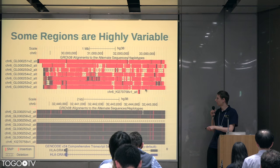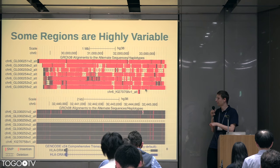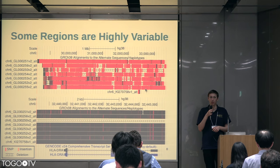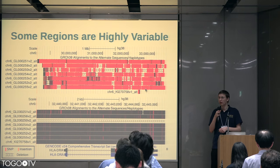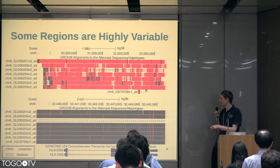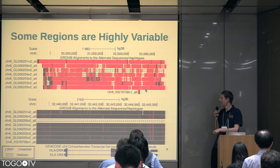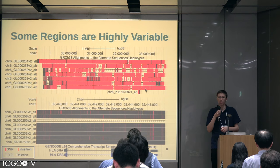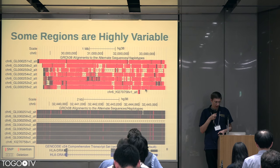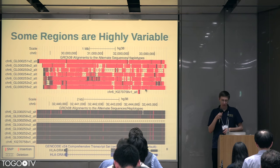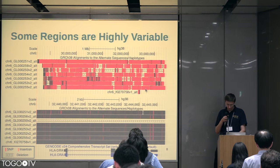Even when you zoom in down here, it's maybe not quite so red, but there's still a lot of SNPs — way more than you would expect in an ordinary region. And some versions just don't have this two-kilobase region that we're looking at. There's a lot of variation out there.